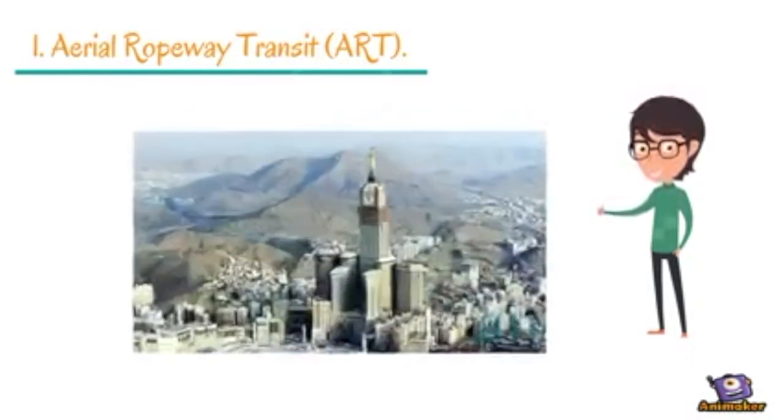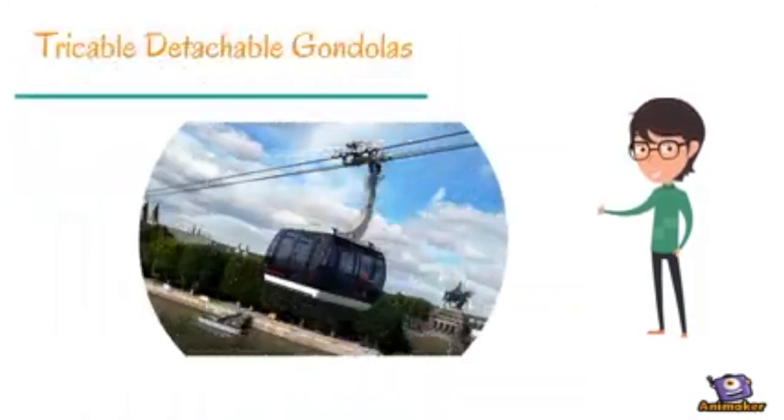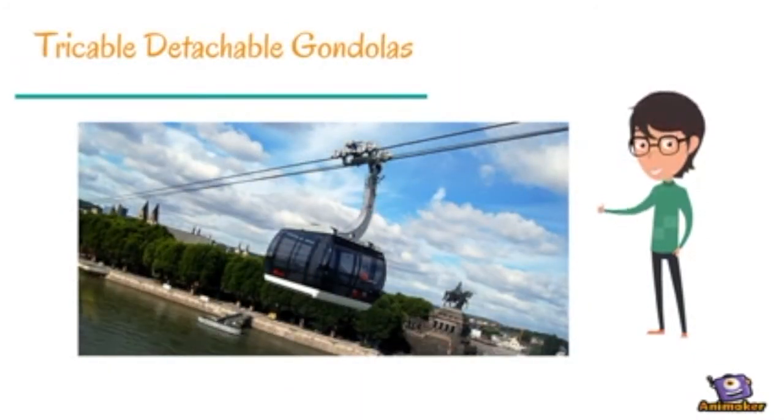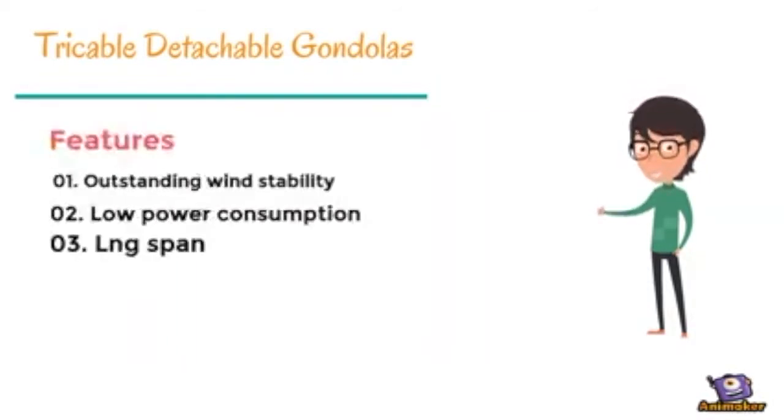They found that the best type of this mode to be applied in Makkah is tricable detachable gondolas for three reasons. First, this type could load up to 9,900 pounds per time. Second, this technology has some advantages such as outstanding wind stability, low power consumption, and the use of very long spans of up to 10,000 feet.